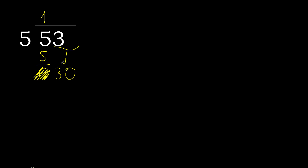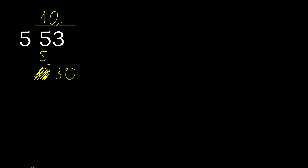2 numbers — 1, 2 — therefore here 0 point. 2 numbers is 0 point 30. 5 multiplied by 6 is 30. 30 minus 30 is 0. Therefore finish.